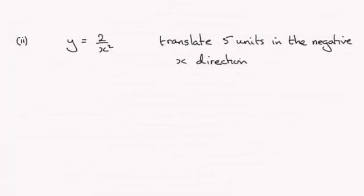Hi, now for this part of the question, we're given the curve y equals 2 over x squared and asked to write down the equation which is a translation of 5 units in the negative x direction.